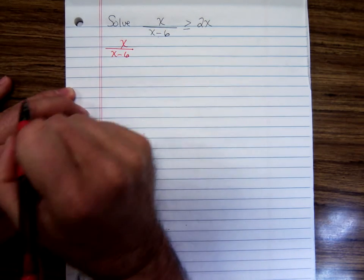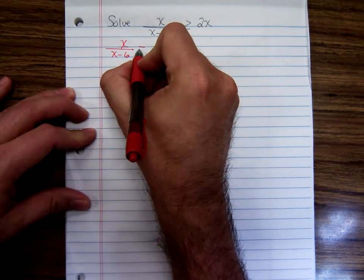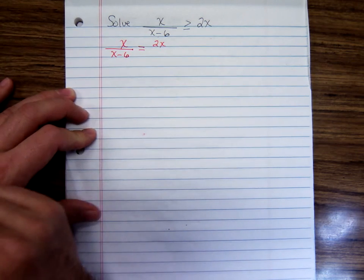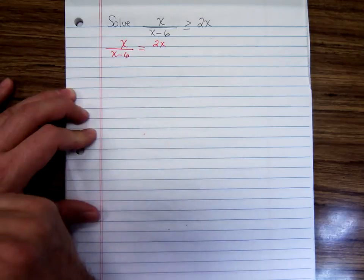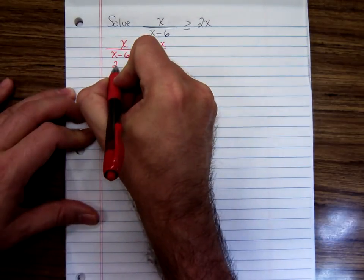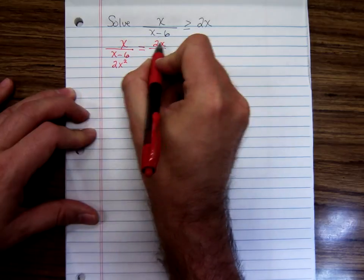So we're going to solve x over x minus 6 equals 2x. You can multiply both sides by x minus 6 or cross multiply, whatever you want to do. I'm going to cross multiply.